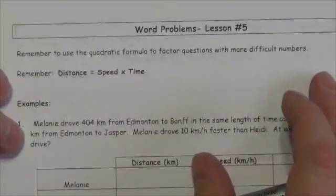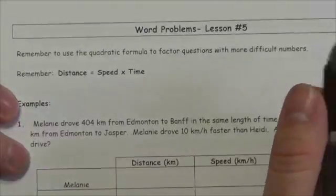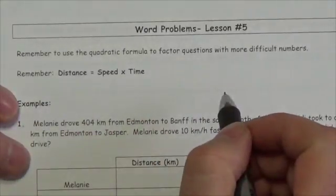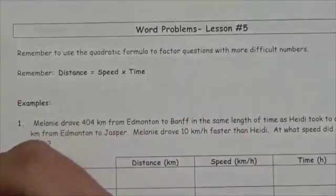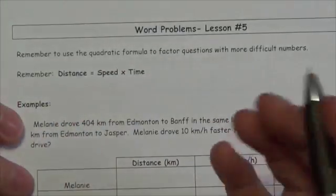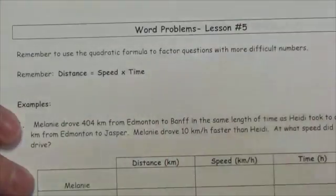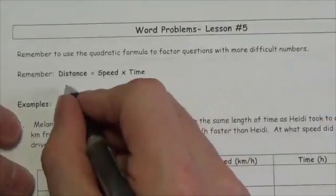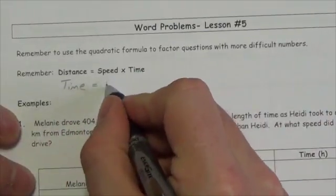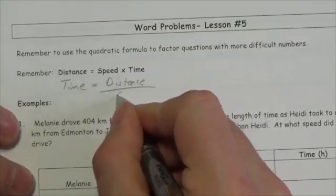In this final lesson of this particular chapter, we're going to be working through some word problems — specifically distance, speed, and time problems. Remember that the formula for distance is speed times time. More often appropriate for these questions, time equals distance divided by speed.